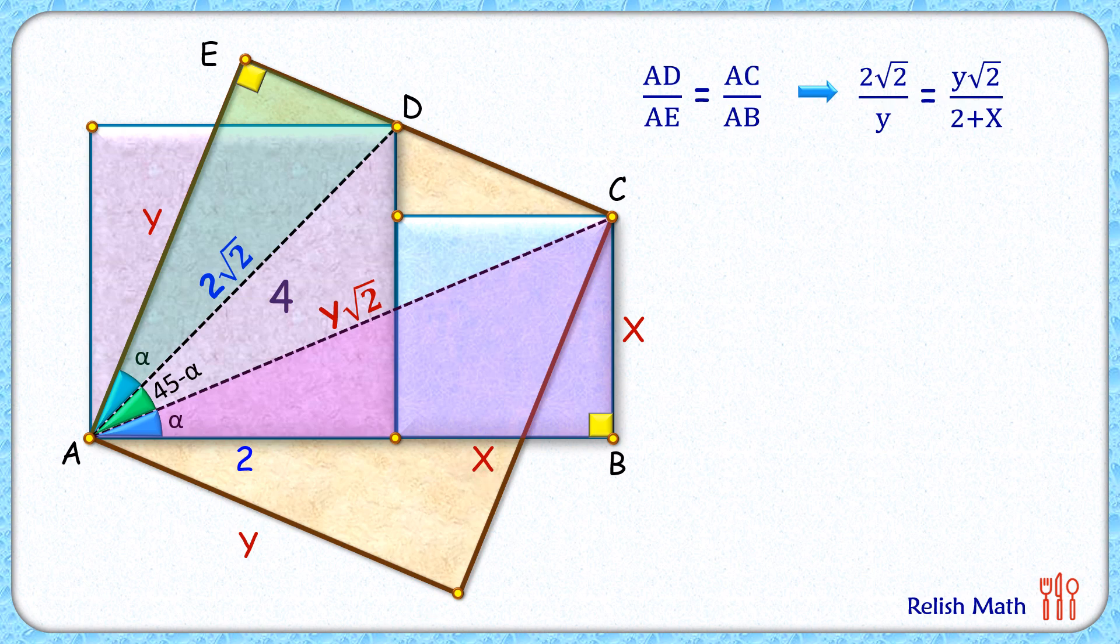Both sides, √2 gets cancelled. When we do cross multiplication, we get y² equals 2(2+x), or 2x+4. We'll use this relation later on.